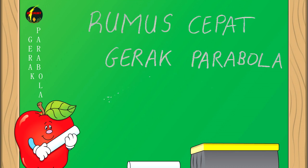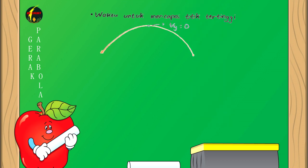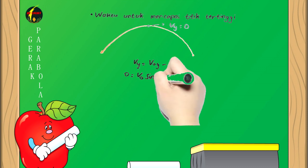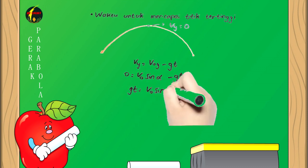Rumus gerak parabola: waktu untuk mencapai titik tertinggi. Pada saat benda di titik tertinggi, VY = 0. Kita hitung dengan persamaan VY = V0Y - gT. Sehingga 0 = V0 sin α - gT, jadi T = V0 sin α / g.